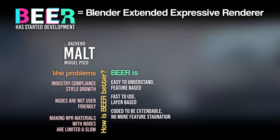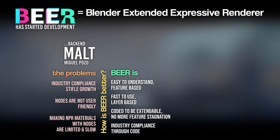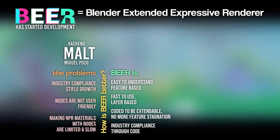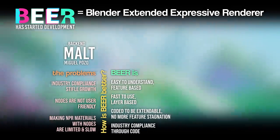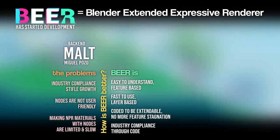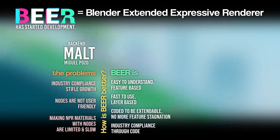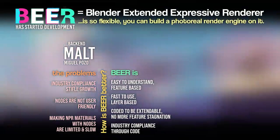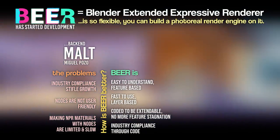Coming back to the material auto-translate issue — when you have the code of the shaders, the auto-translation problem is not as big of an issue as many have worried. Beer is so flexible that you could even build a photoreal render engine on it.